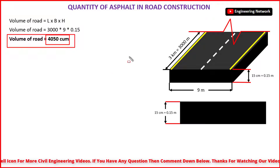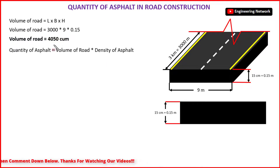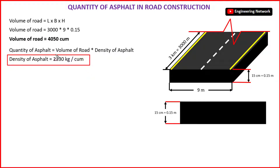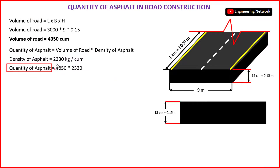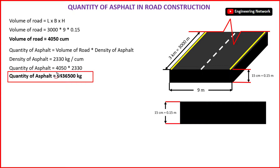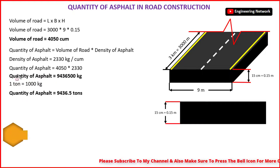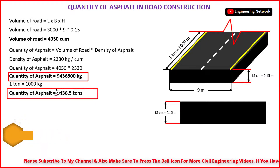Now I can easily find out the quantity of asphalt in this road construction. The quantity of asphalt is equal to the volume of the road × density of asphalt. We know that the density of asphalt is equal to 2330 kg per cubic meter. So the quantity of asphalt is equal to 4050 m³ × 2330 kg/m³, and after calculation the total quantity of asphalt will become 9,436,500 kg. Since 1 ton is equal to 1000 kg, this is equal to 9436.5 tons.